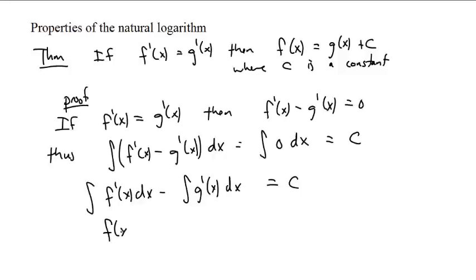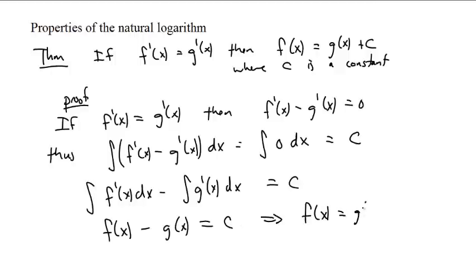F(x). So f(x) minus g(x) equals c. There are constants in there, but we can combine all the constants together and end up saying that f(x) is g(x) plus c. What I'm saying is: if two things have the same derivative, then they are the same up to a constant.